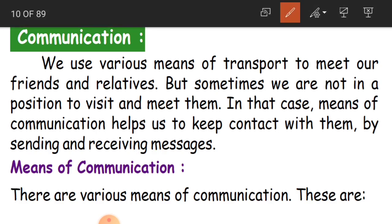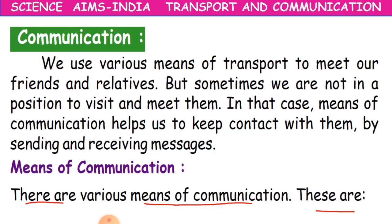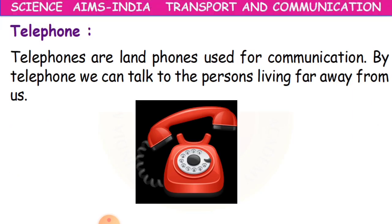There are various means of communication. The first one is the telephone. You can see the picture here — it's a beautiful red telephone. Telephones are land phones used for communication. We cannot carry them; they are fixed at a particular place. At home you may have one land phone, and in offices people will also have land phones fixed at a particular place.